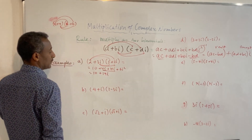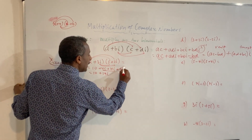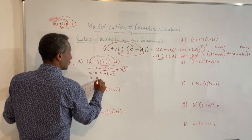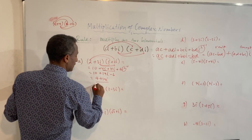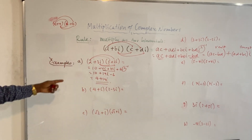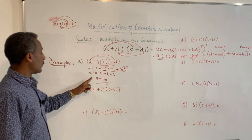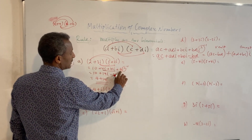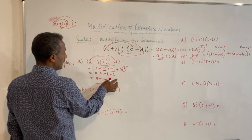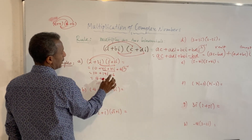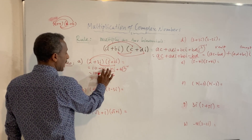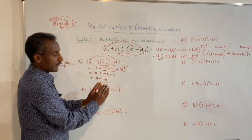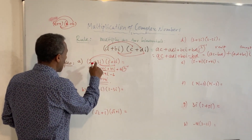Ten plus four i plus fifteen i plus six i squared. Since i squared equals minus one, six i squared becomes minus six. So we get ten minus six, plus four i plus fifteen i, which is four plus nineteen i. This is the real part and this is the imaginary part of our product.